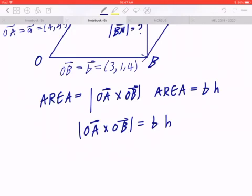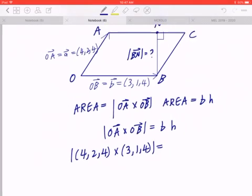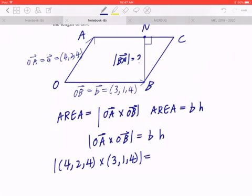And if you go back to the given and if you look at the diagram, OA is given to be (4,2,4), OB is given to be (3,1,4). If you look at the base and the height of this parallelogram, the base is going to be the magnitude of OB. The height is going to be the magnitude of BN. So now, you plug in all the numbers and you can isolate for the magnitude of BN.